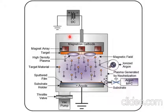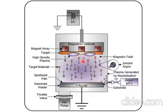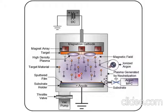After creating a vacuum inside the magnetron sputtering reaction chamber, an inert gas is incorporated inside the reaction chamber. When the inert gas is incorporated, a high potential is applied across the cathode and anode of the reaction chamber. This high potential is in the form of direct current applied between the cathode and anode.